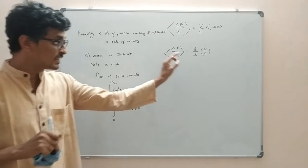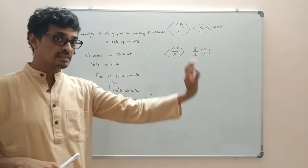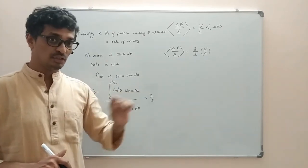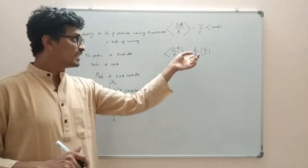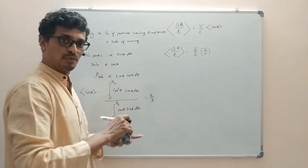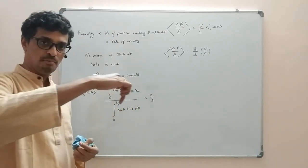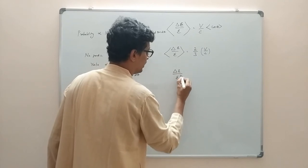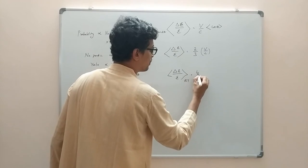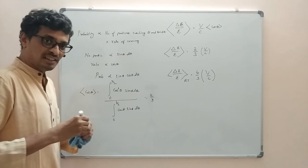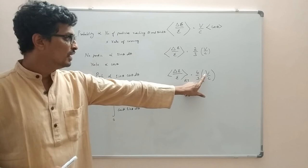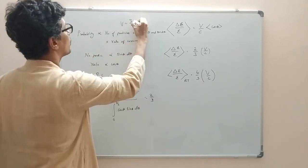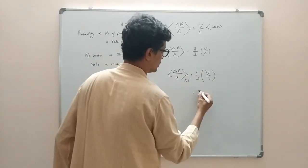The fractional average energy gain as the particle crosses from upstream to downstream is (2/3)(V/c). Similarly, the same gain occurs when the particle crosses back from downstream to upstream. So in one full round trip, the total energy gain is ΔE/E|_{round trip} = (4/3)(V/c). Since V = (3/4)U, this simplifies to ΔE/E ∝ U/c, where U is the velocity of the shock.